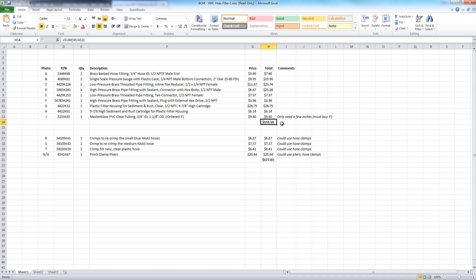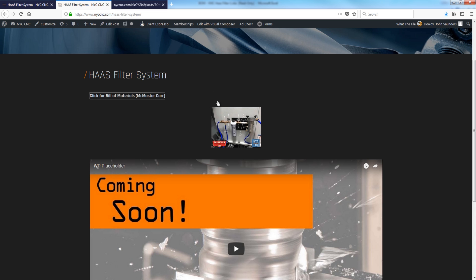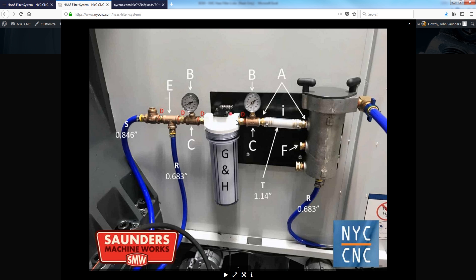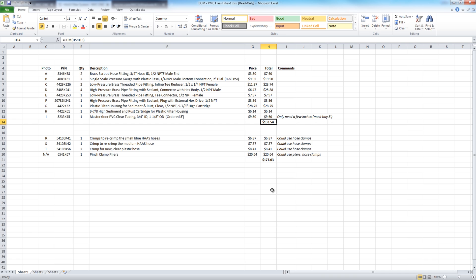You could absolutely save some money if you bought some of these things probably from a local store. I find, though, with all the pipe fittings, often it's easier just to get what works. The photo letters here correspond to this picture on the NYC CNC website, where, inspired again by Jay Pearson, we went ahead and labeled each individual item so that you can see what exactly is what, including even the Haas hose dimensions with the appropriate clamps. Again, we've got those listed in the bill of materials here.